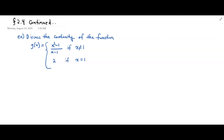In this example, we have g of x, and g of x is two pieces of a function. We have x squared minus 1 over x minus 1, and we also have g of x equals 2 as long as x equals 1.